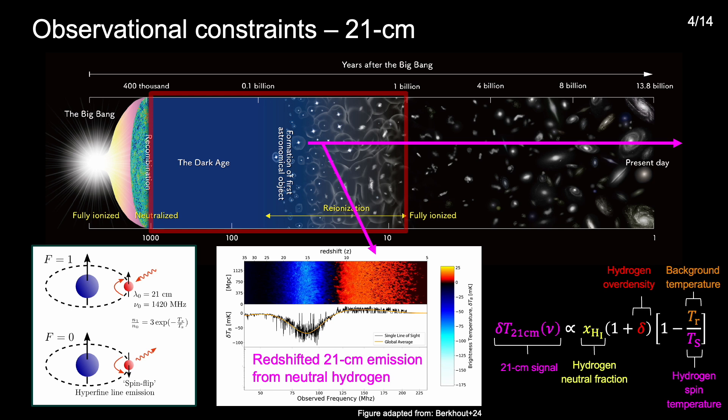And the amplitude of these signals is a function of the ionization, density and temperature state of the IGM and measurements or upper limits on the 21cm signal therefore enable one to constrain astrophysical parameters of the IGM and properties of the sources ionizing and heating it.